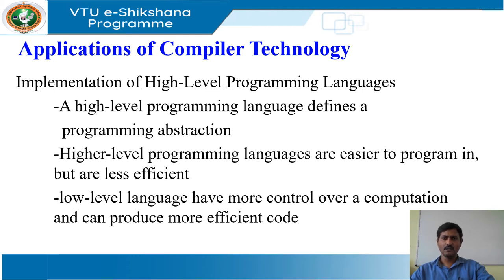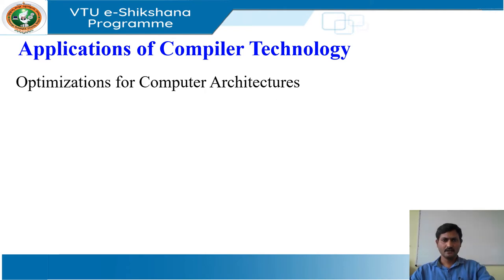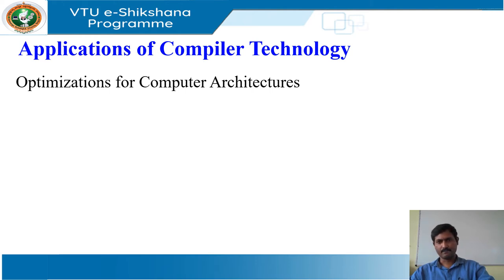Optimizing compilers include techniques to improve the performance of generated code, thus offsetting the inefficiency introduced by the high-level abstractions. The rapid evolution of computer architecture has also led to an insatiable demand for new compiler technology. Almost all high-performance systems take advantage of the same two basic techniques: parallelism and memory hierarchies.